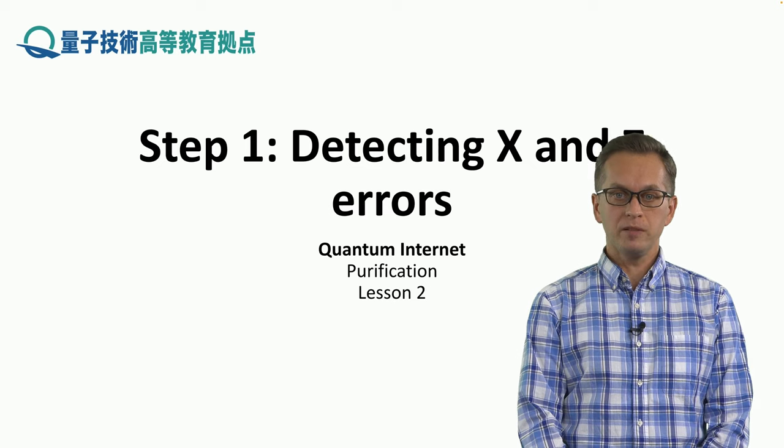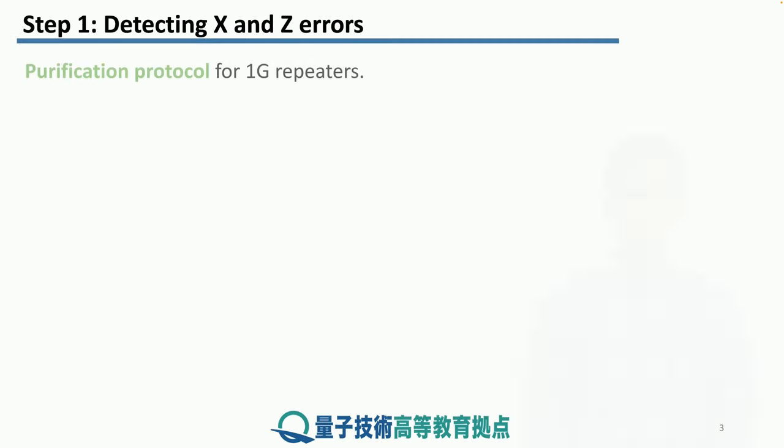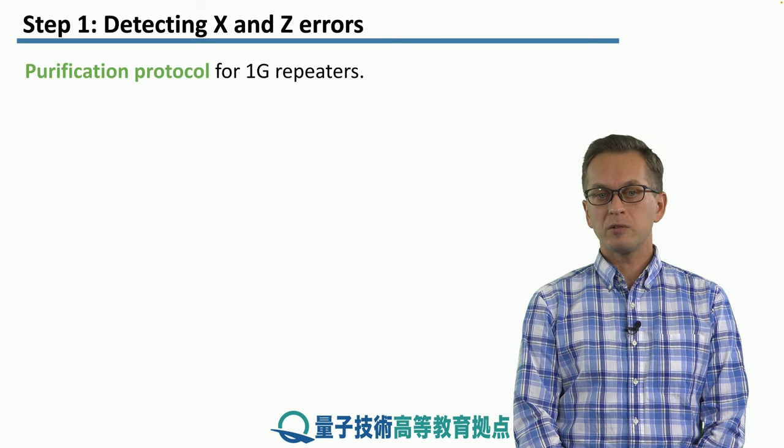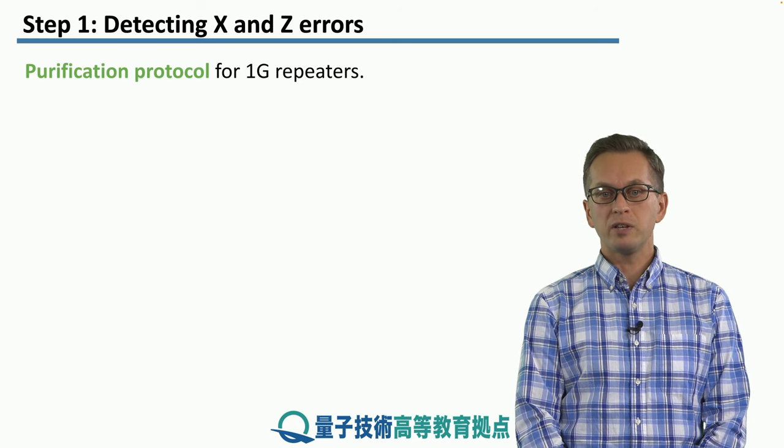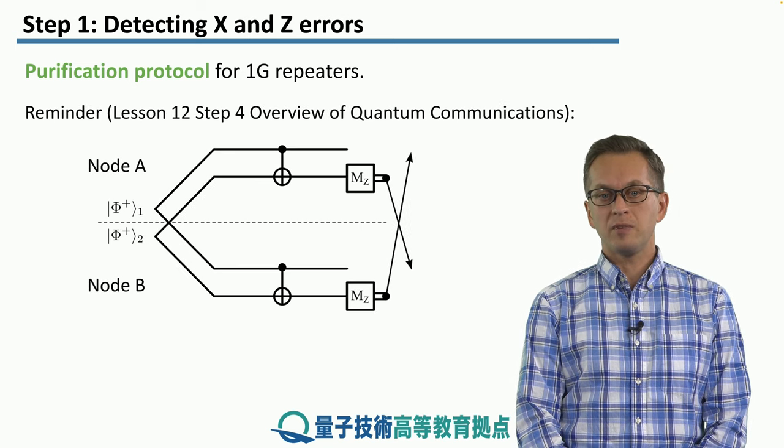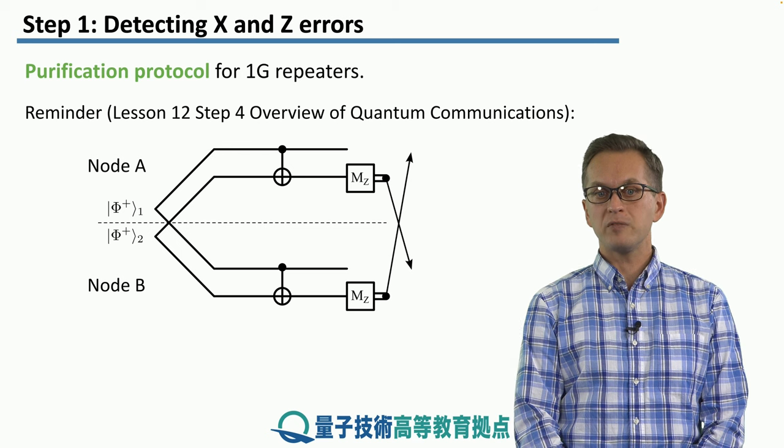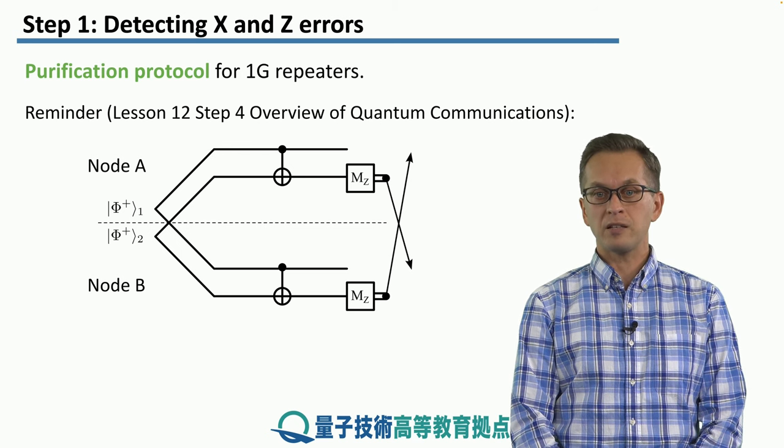So let's start with step one on detecting X and Z errors. Now we're going to do a quick review of the purification protocol for 1G repeaters. We have discussed this scheme already in our module on overview of quantum communication in lesson 12, step four, and it goes as follows.